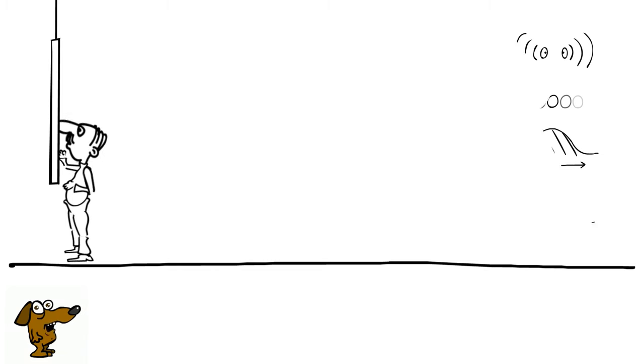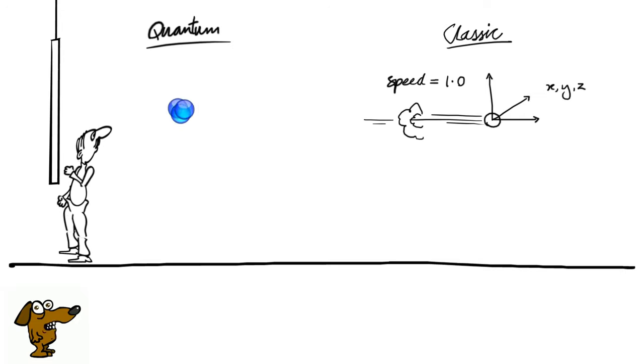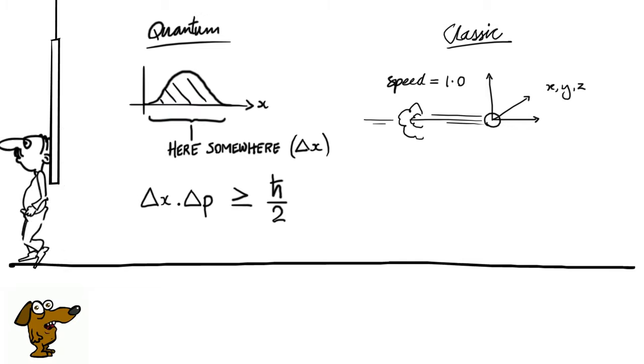In classical physics we are accustomed to calculating and predicting things exactly. However in quantum physics we cannot do this. At best, we can predict probabilities, write formulas and draw curves to represent where things are most likely to be.